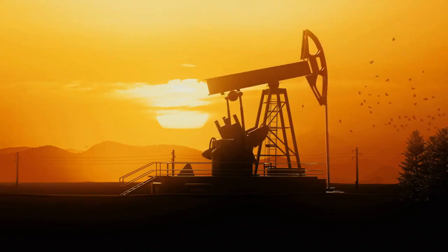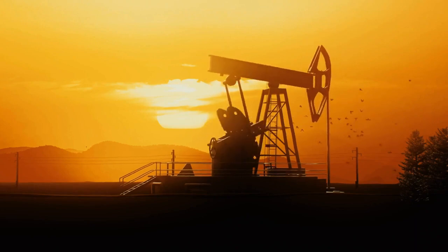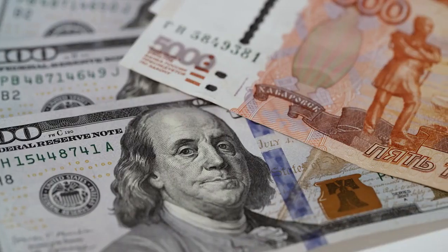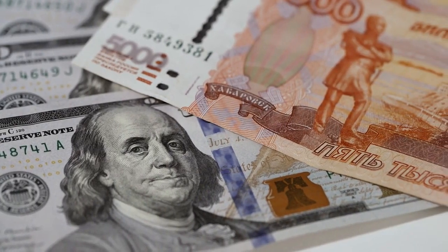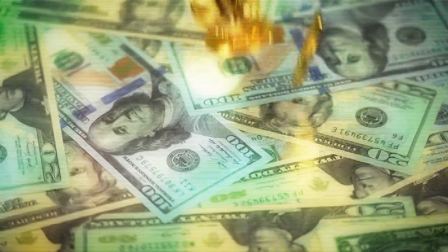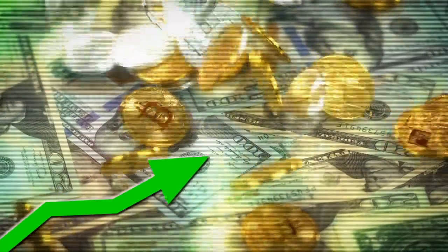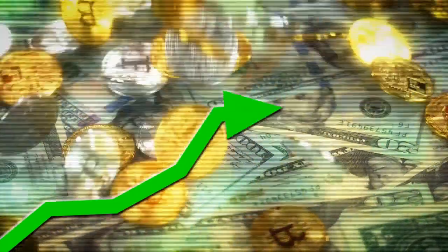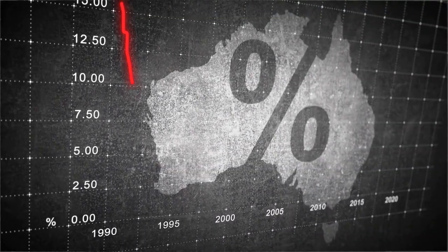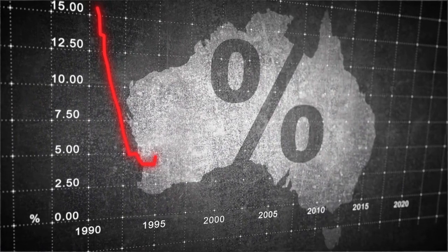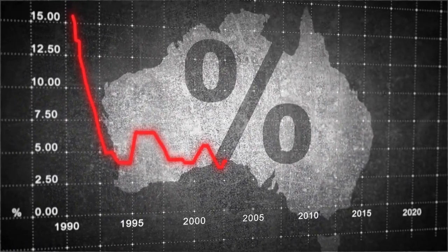One thing that investors should watch out for is how Saudi Arabia accepts payment for its oil. The petrodollar system is based on the Saudis demanding US dollars for payment. If the Saudis start accepting payment for oil in other currencies, that will signal a new era in global economics. China, Iran, Russia, and Venezuela will be key players in this game, with North Korea on the sidelines.